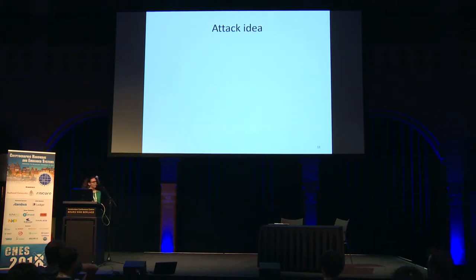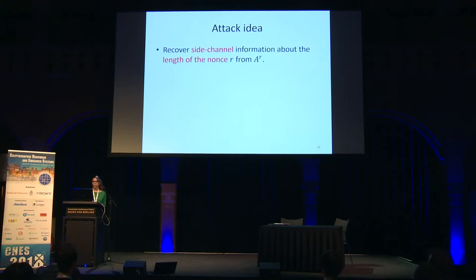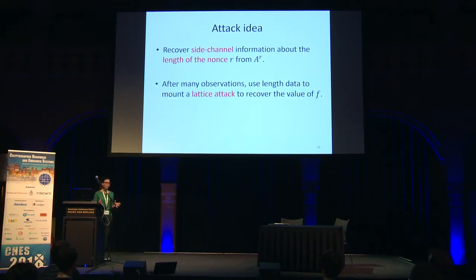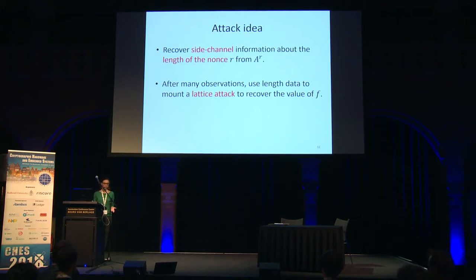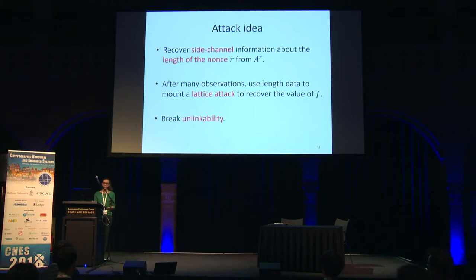The idea behind the attack: we want to obtain information about the length of the nonce r in the exponentiation, which can be done via a side-channel attack. With many observations about the length of r, we can mount a lattice attack to recover f — the secret key component. If an attacker recovers f, it breaks the unlinkability guarantee.